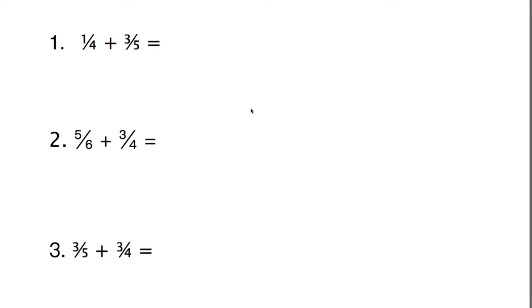So what do we do if our denominators aren't the same? And it's not immediately obvious what we can do to one to turn it into the other. Well, in this case, we have one quarter add three fifths. Now, I know that four and five go into twenty, so I could turn these into twentieths.